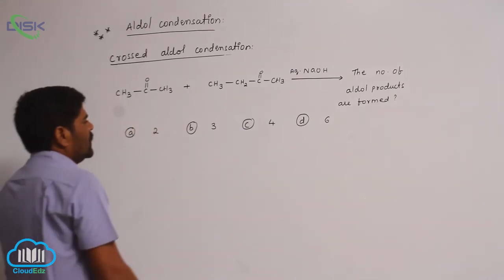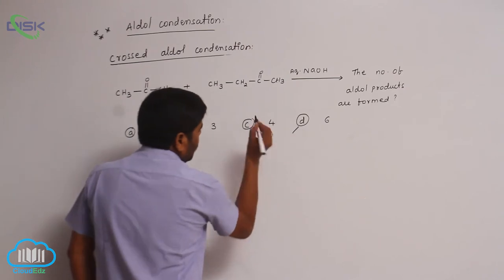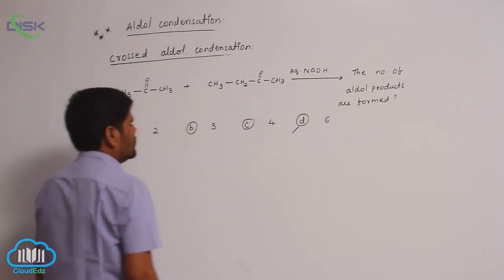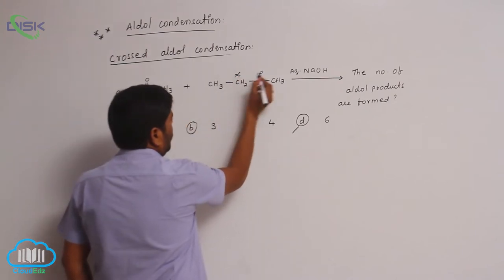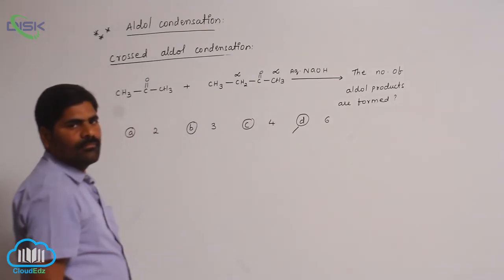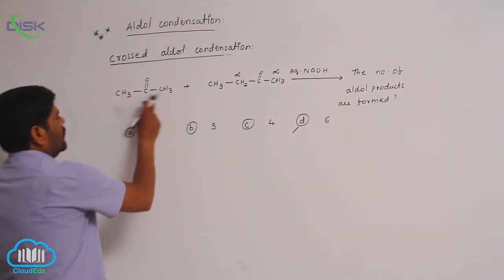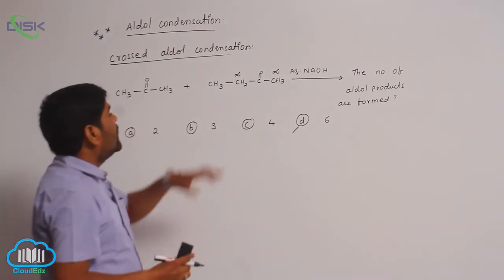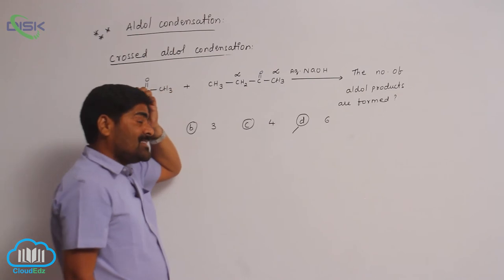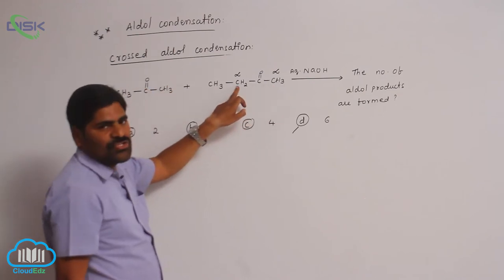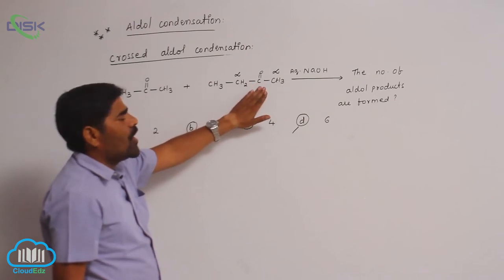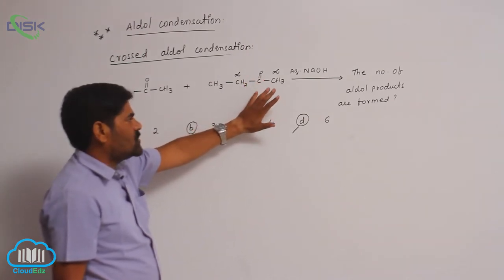The answer is D, which is correct. D is correct because the first compound has alpha carbons — it is CH3 and it is also alpha. These two alpha carbons are identical, but these two alpha carbons are different because one is CH3 and the other is CH2. That is the reason why 4 products are formed from this compound.